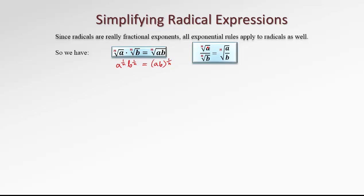Similarly, a quotient of radicals of the same degree is the radical of a quotient. This rule comes directly from the quotient rule for powers: a over b to a certain exponent, in this case 1 over n, is the same as the numerator to 1 over n over the denominator to 1 over n. So any radical can be split over multiplication and over division.